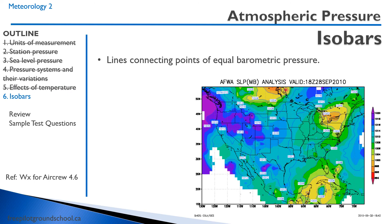Isobars are lines connecting points of equal barometric pressure. You'll see isobars on weather maps, surface analysis maps, and forecast maps as well. Here they are shown in a blue color. I just have a red pen — you can see this line right here, I'm just following it. That line has a pressure of 1,016, and this one looks like 1,012 hectopascals. If you follow one around, it'll make a ring — you can think of it similarly to contour lines on a topographic map.